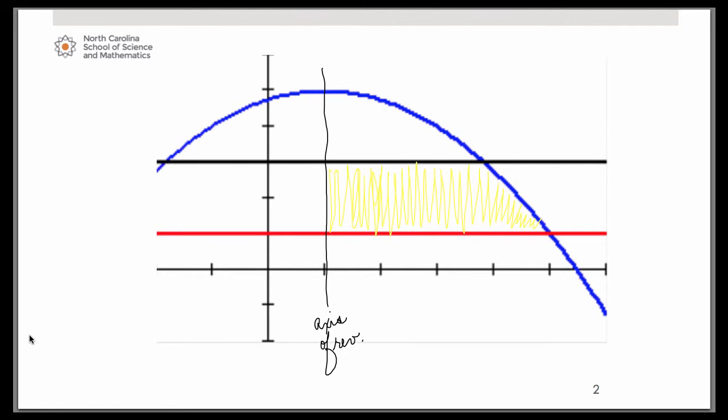And we want to revolve the region to the right of that bounded by the curves. So it ends up that it is the yellow region that we want to revolve. Oftentimes the hardest part of these problems is just making sure you're reading them correctly to ensure that you have the correct region of revolution. So this is the one we're talking about. So we want to take that yellow region and flip it around that vertical axis of revolution at x = 1.